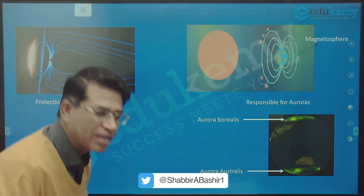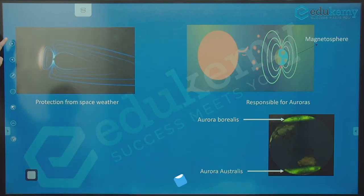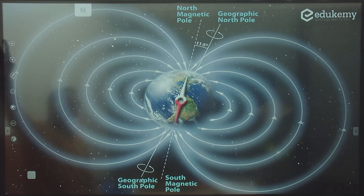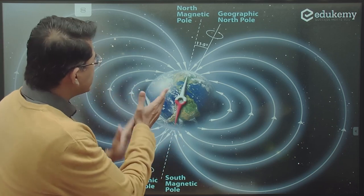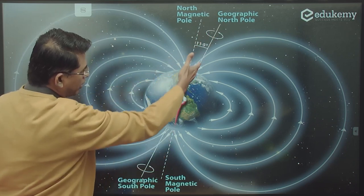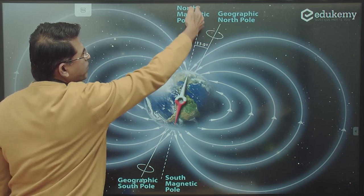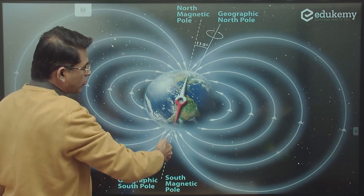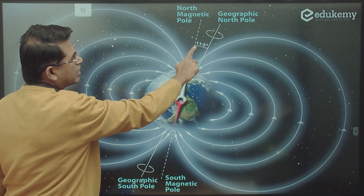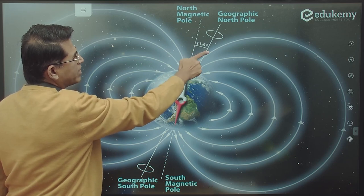This is the depiction of the poles with approximately 11 degrees tilt. This is the geographic north and south pole, the axis around which Earth is spinning. This is the magnetic north and south pole axis, approximately 11 to 11.5 degrees.